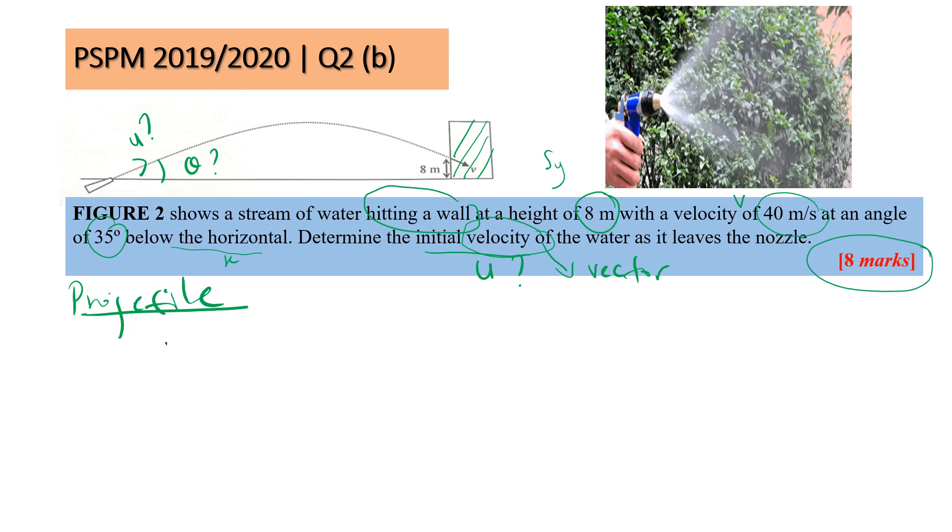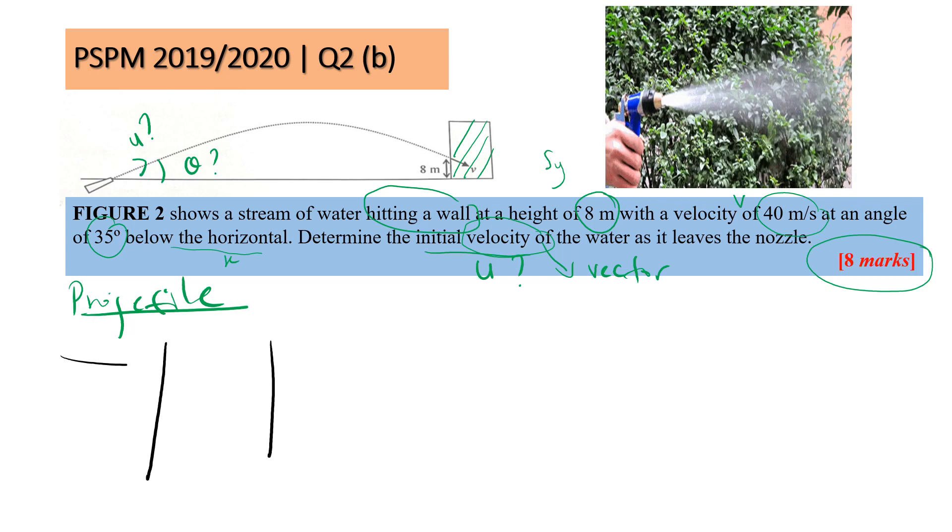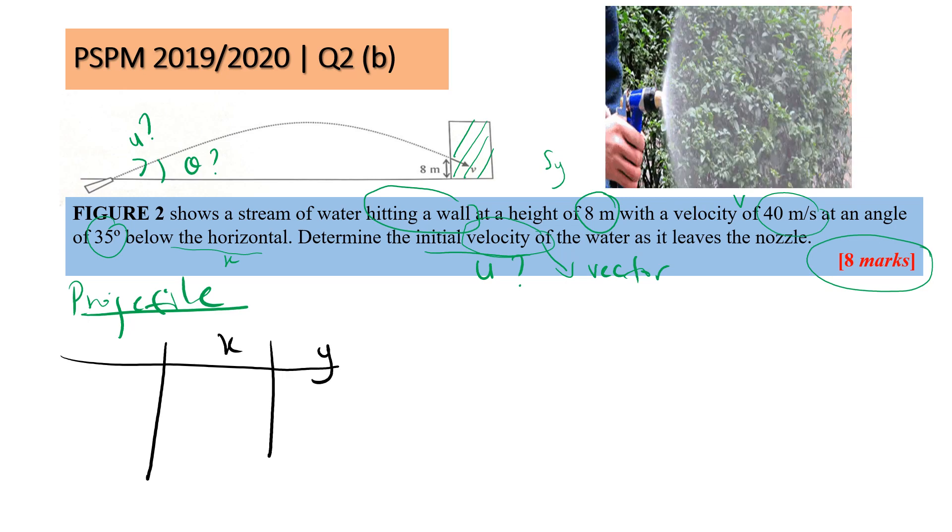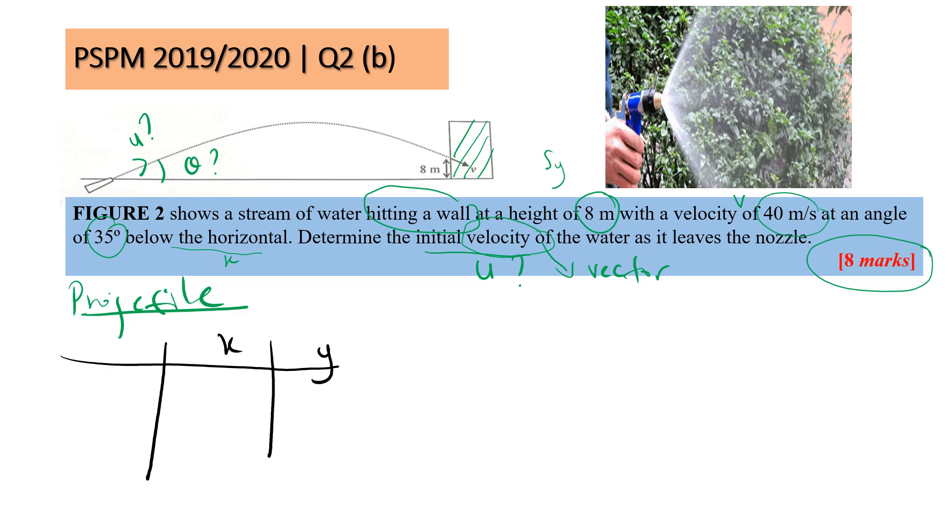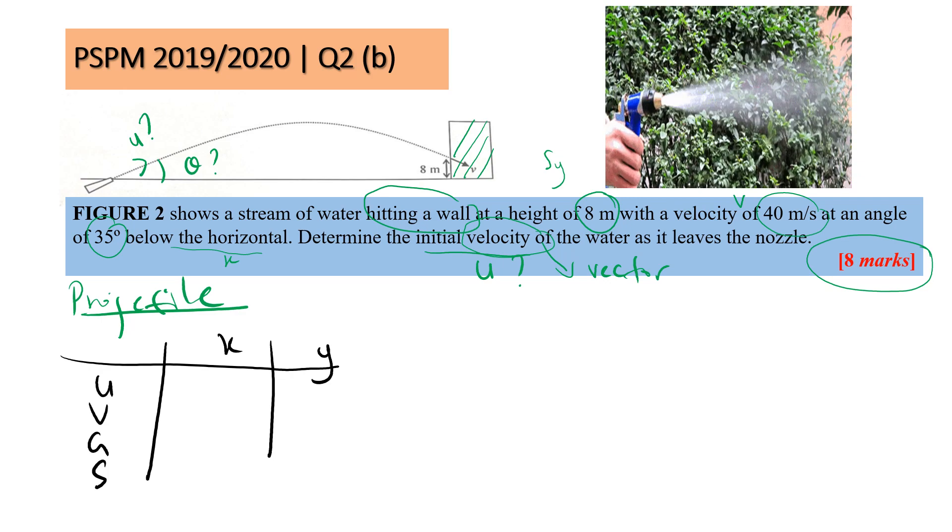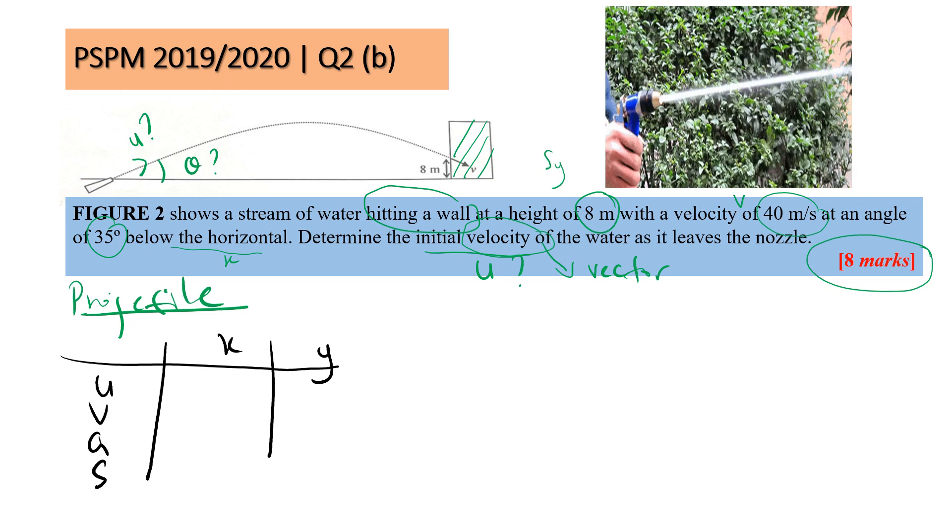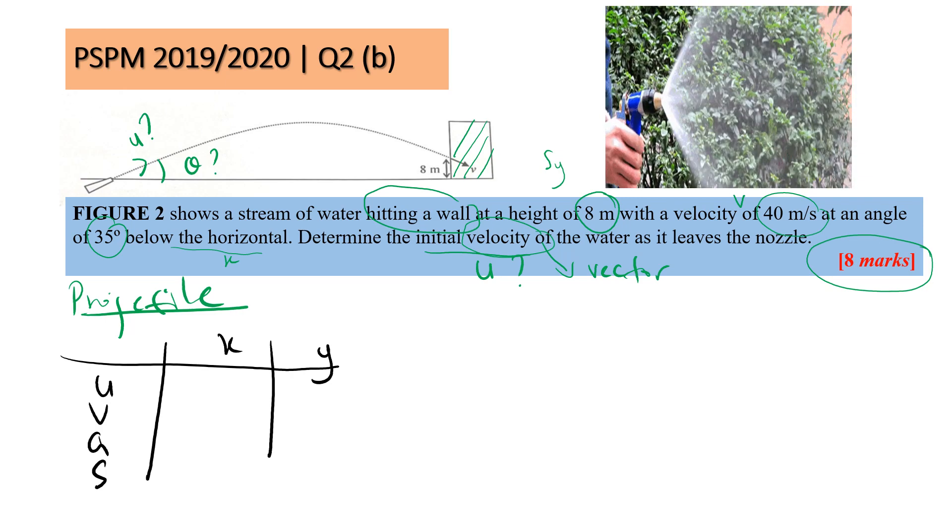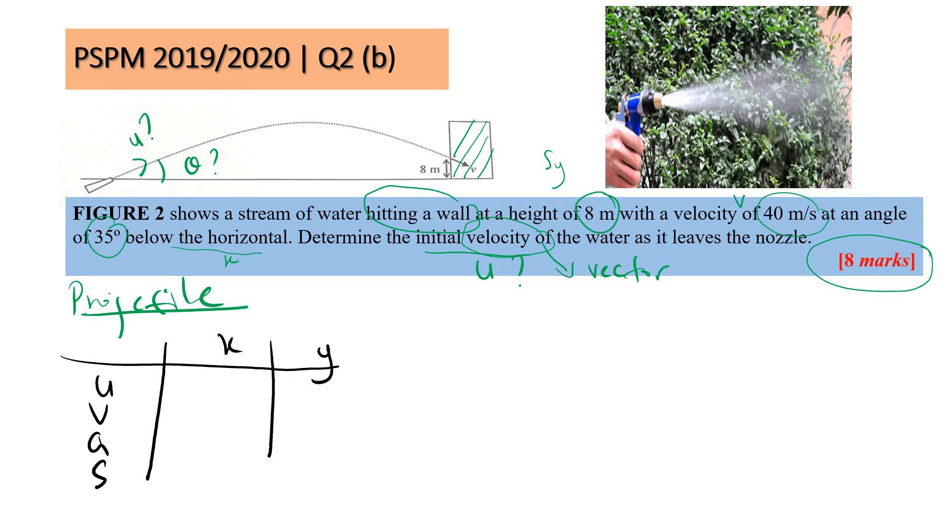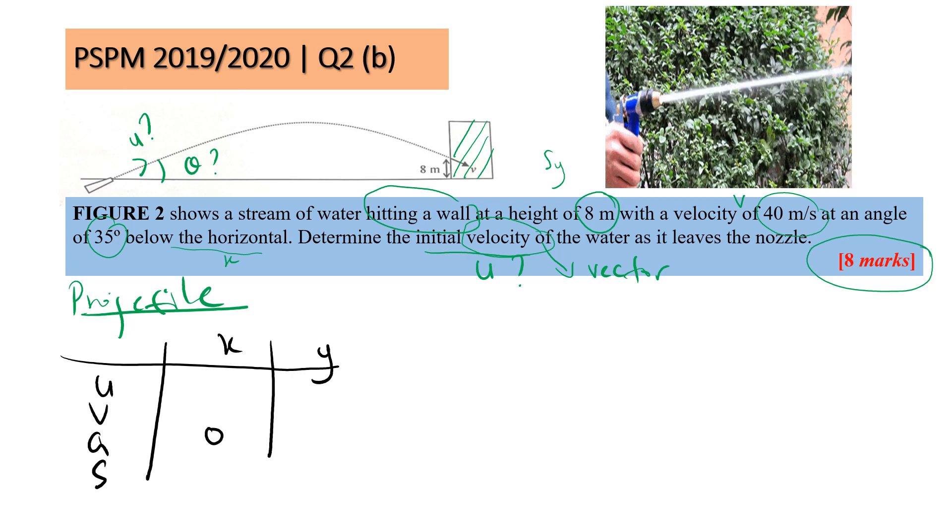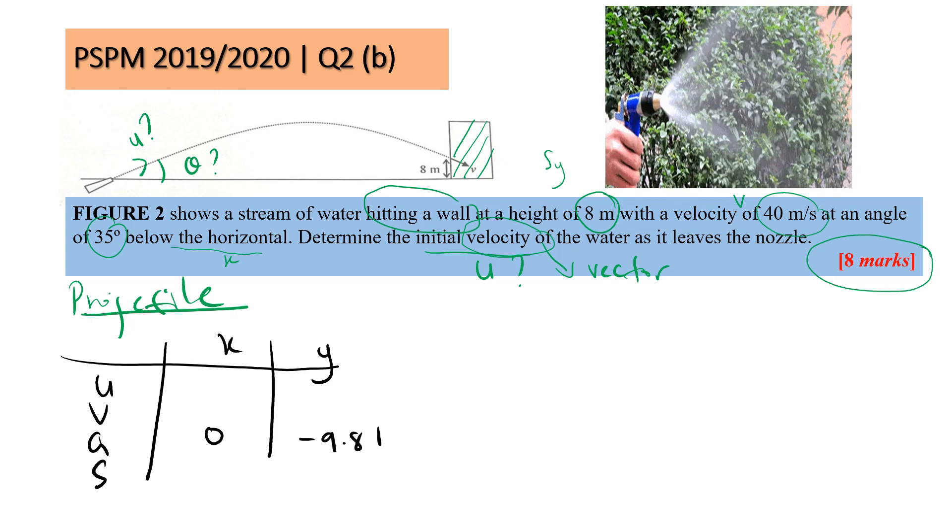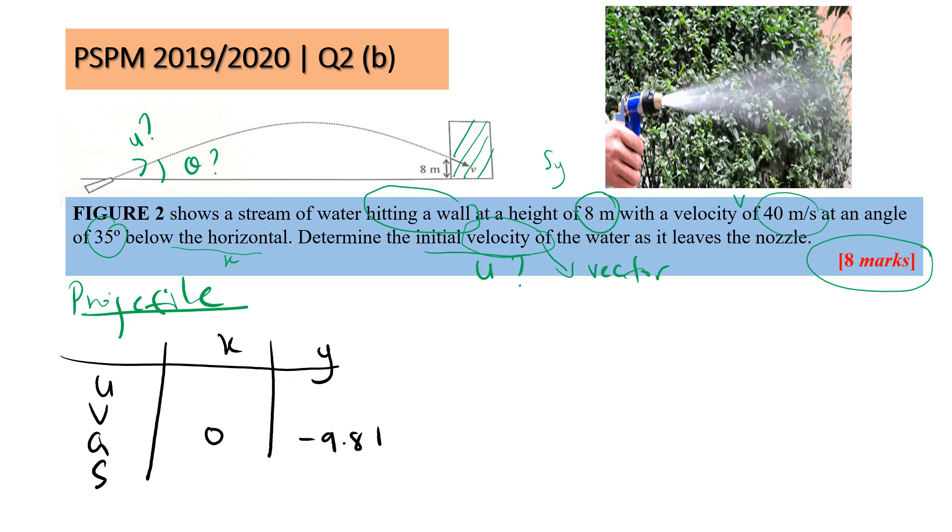We need to draw a table. So we have X component, Y component. Because this resolves into two components, X and Y. So we have U, V, A, S. I use this formula. What is constant? The AX is always 0, AY is negative 9.81. Next, we fill in the table here.